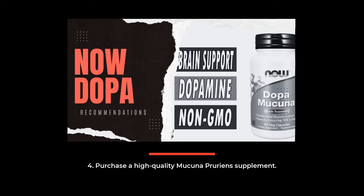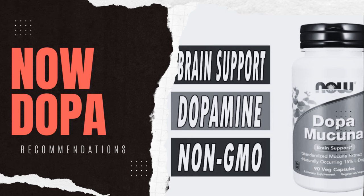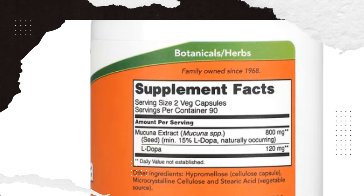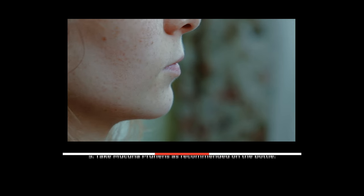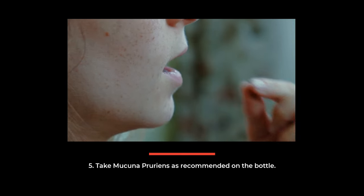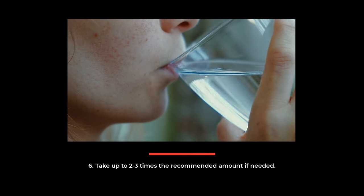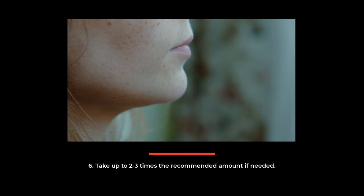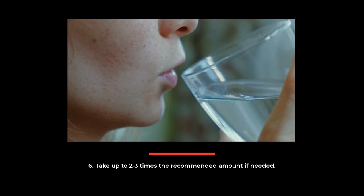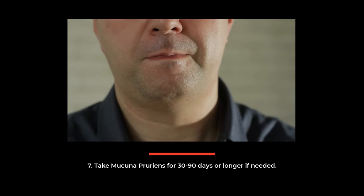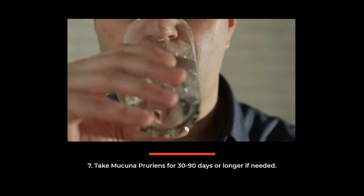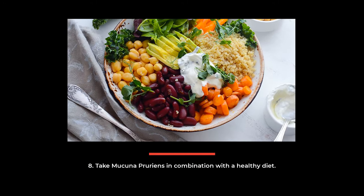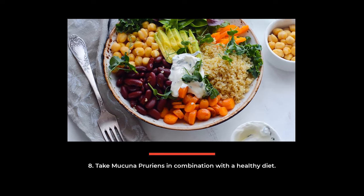Four, purchase a high-quality Mucuna Pruriens supplement. My favorite that is also less than $20 is Dopa Mucuna by Now Supplements. It contains 800 milligrams Mucuna extract and 120 milligrams L-Dopa. Five, take the supplement as directed on the bottle. Six, for the first few weeks after detoxing, use up to two to three times the amount recommended if needed. Seven, take Mucuna Pruriens for 30 to 90 days or longer after quitting alcohol. Can also be used while tapering off alcohol. And eight, take Mucuna Pruriens in combination with a healthy diet and other nutritional therapies.